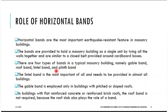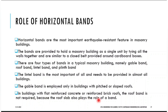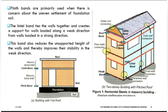At plinth level, where your construction starts, the lintel band is the most important of the three. The gabled band is employed only in buildings with pitched or sloped roofs. In buildings with flat reinforced concrete roofs, the roof band is not required because the roof slab itself plays the role of roof band. This picture helps you understand the three different types of bands.